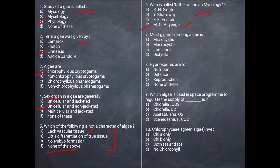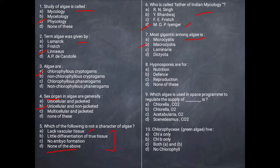Next question: The most gigantic among algae is which form? The largest form of algae is Macrocystis. The correct answer is B, Macrocystis.